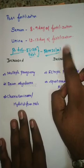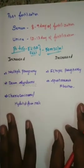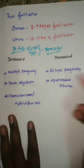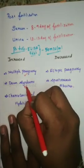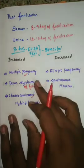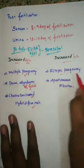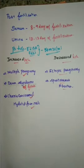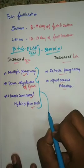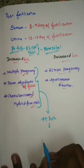An important and repeatedly asked question is: in what conditions is beta HCG increased or decreased? In normal pregnancy, beta HCG is produced. In gestational trophoblastic conditions, HCG is produced in large amounts. Increased HCG is seen in: molar pregnancy, Down syndrome of the fetus, and choriocarcinoma or hydatidiform mole. Decreased HCG is seen in: ectopic pregnancy and spontaneous abortion.